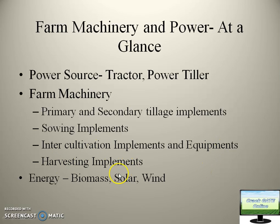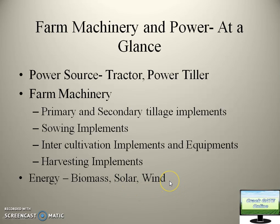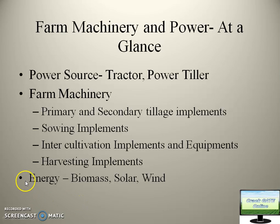Intercultural implements like weeders and fertilizer applicators come into picture. The last stage is harvesting implements — mainly harvesters and vertical conveyor reapers. These all sections come under Farm Machinery and Power. The third important sector is energy — we will study biomass, solar, wind, human energy, and animal energy. Inside biomass, production of biogas and producer gas are covered. A lot of things are involved and as time passes we'll discuss everything.